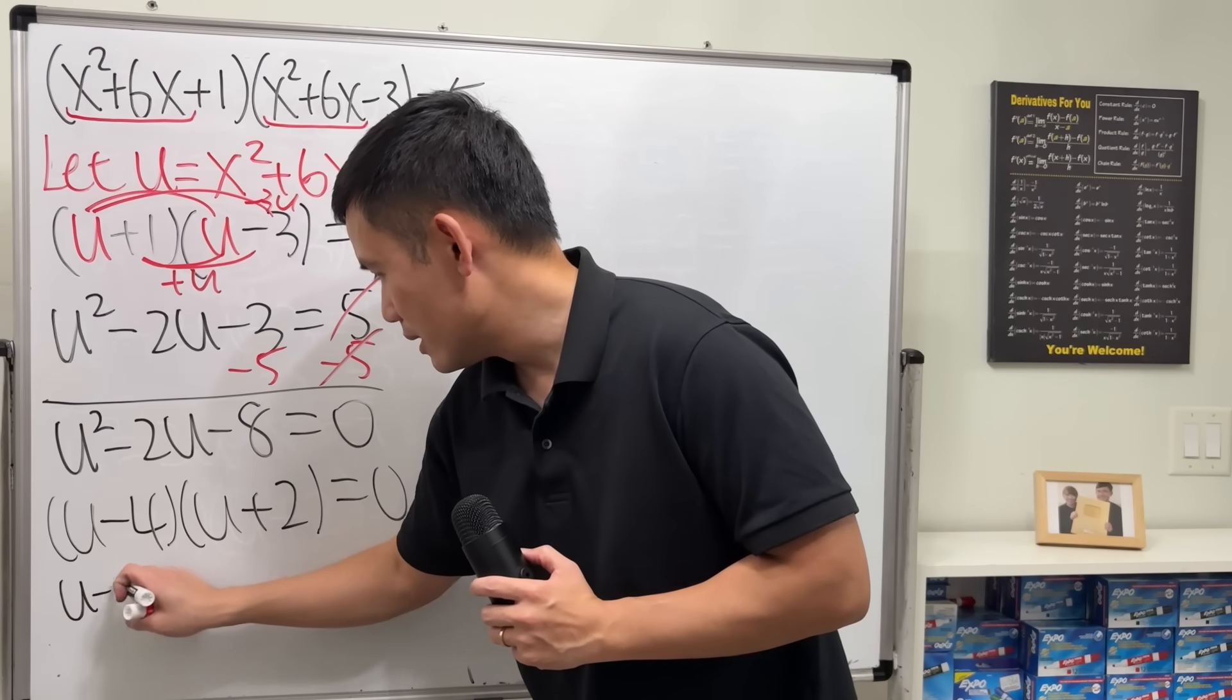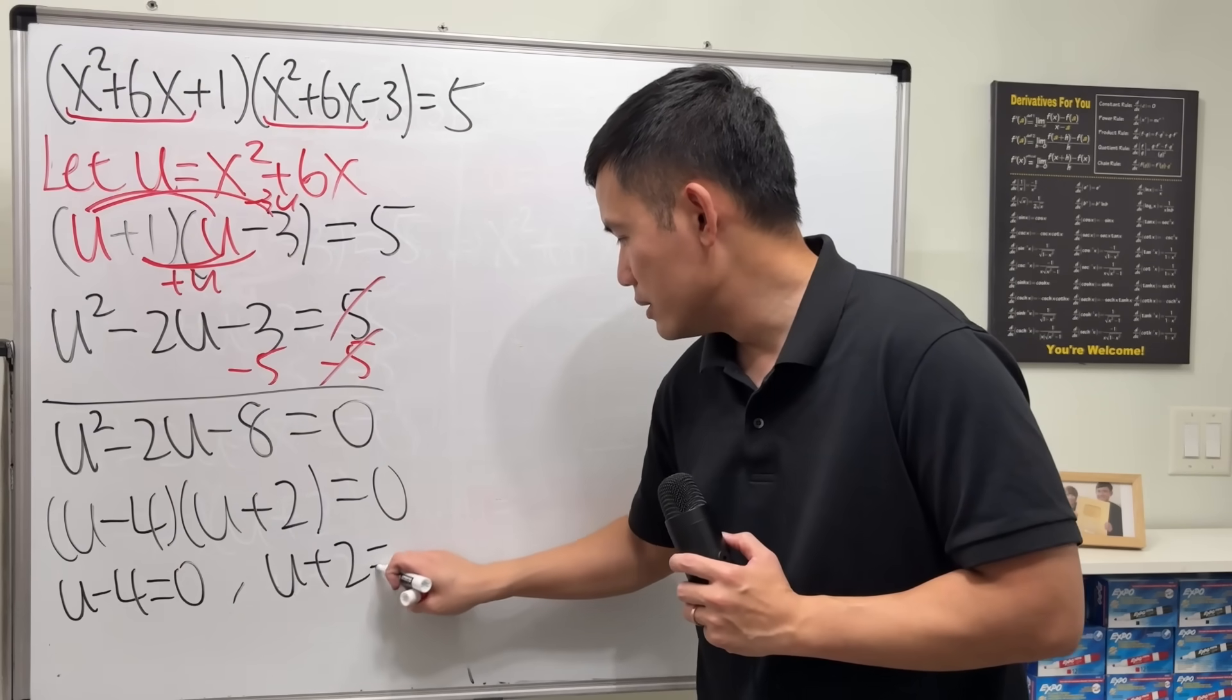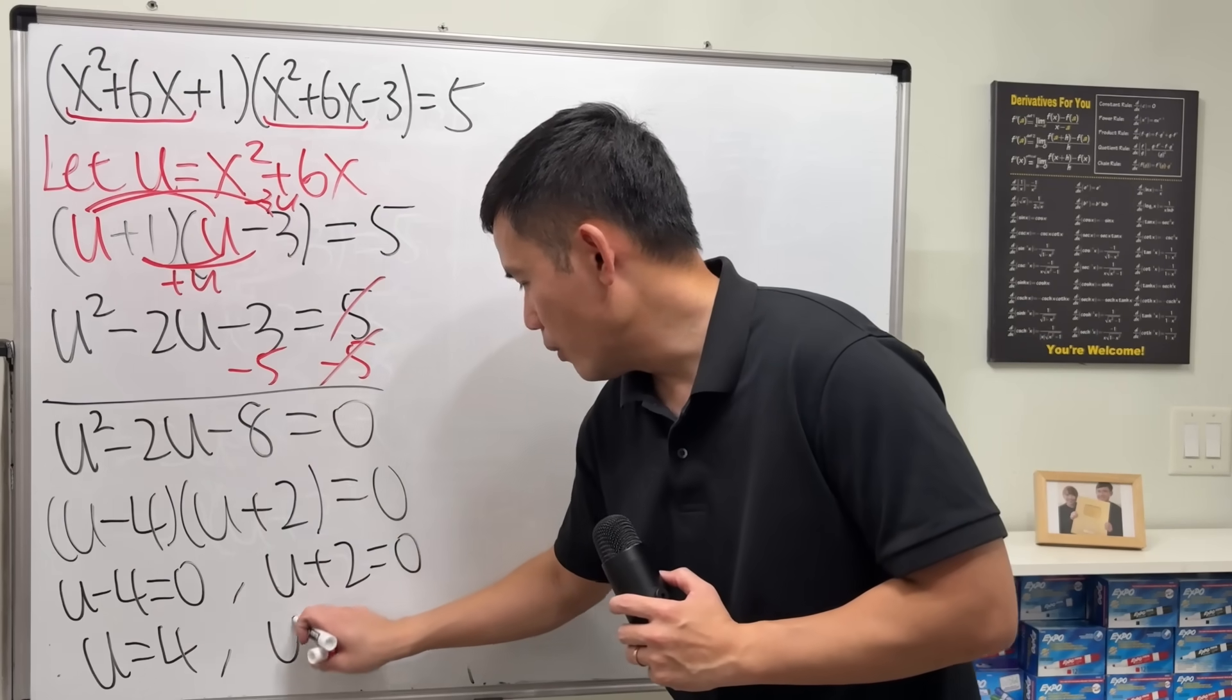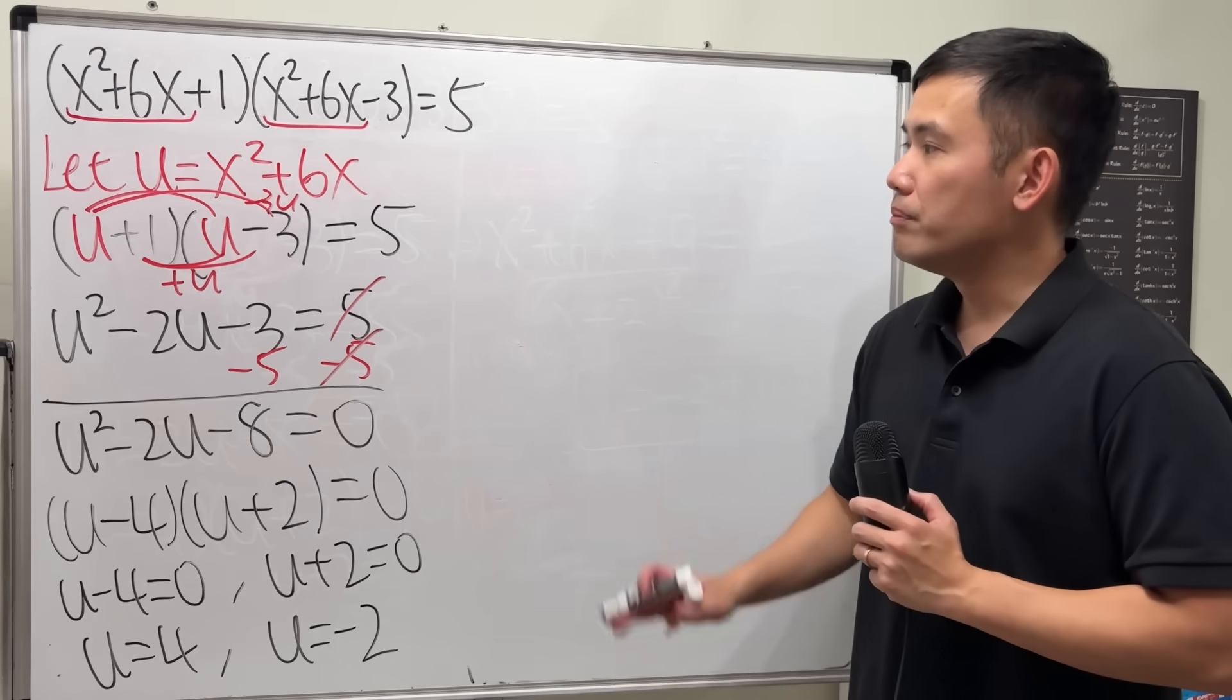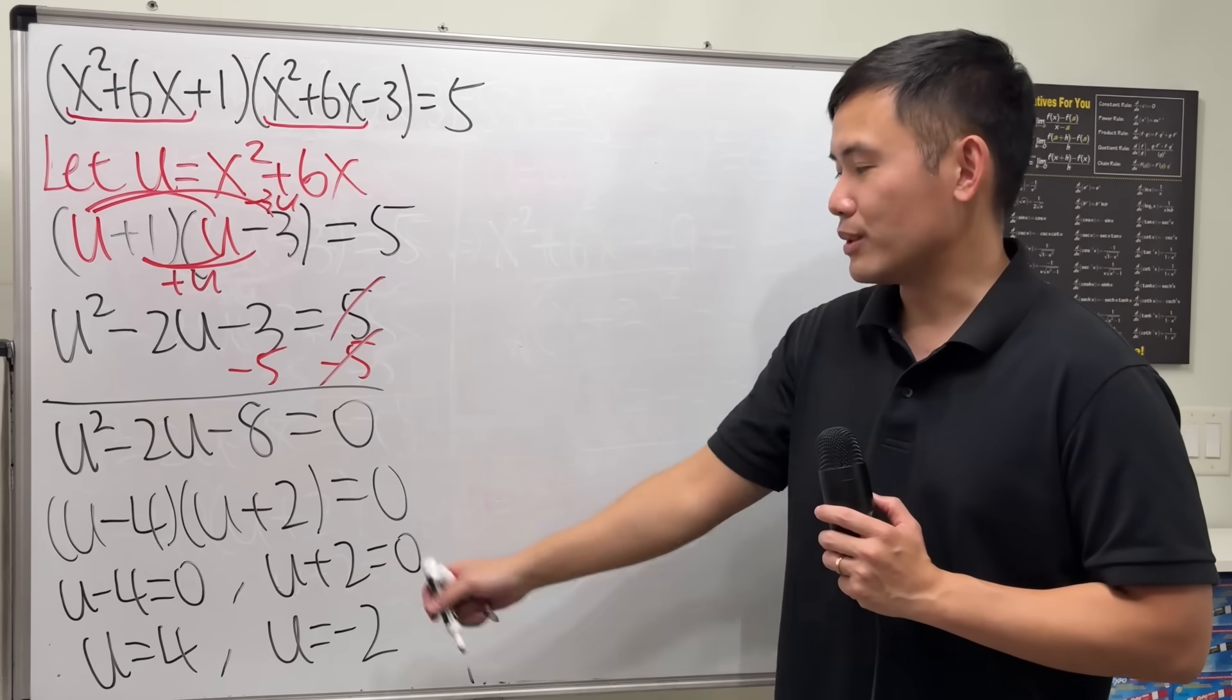Put this equal 0, and put that equal 0. So, u is equal to 4, or u is equal to negative 2. But we are not done yet, because the goal is to find out what x is, not just the u.